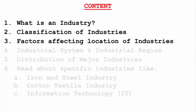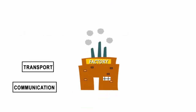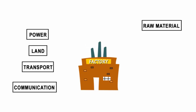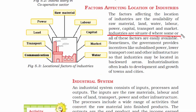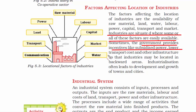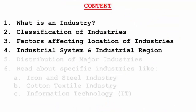Now we'll read about factors that affect the location of industries: communication, transport, land, power, raw material, labor, capital, market, and water. If you see all the industries in India, all these factors are easily available nearby. If some industry is affected by lack of any of these factors, the government steps in and helps them by giving incentives like subsidized power, lower transportation cost, and other economic favors — because industrialization leads to development and growth of towns and cities.